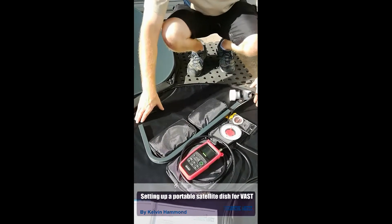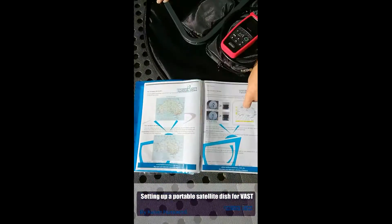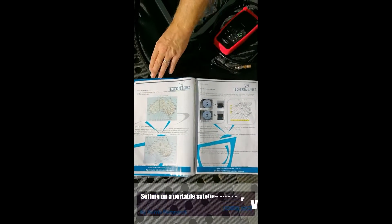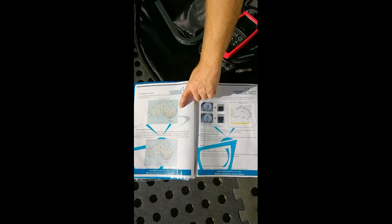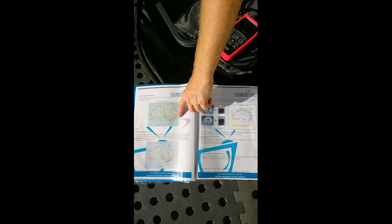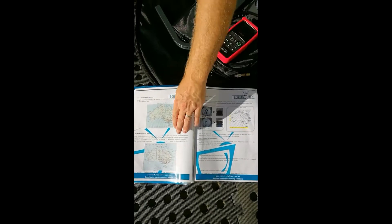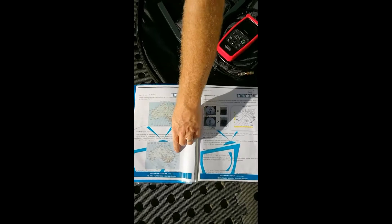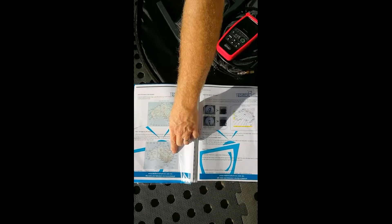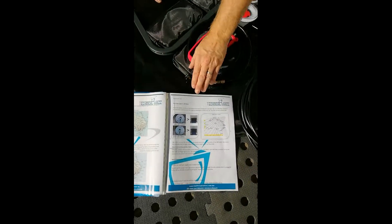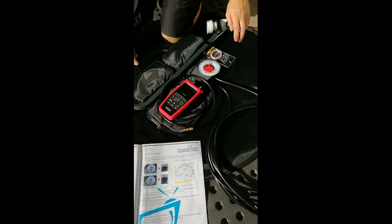And we're going to use these three diagrams here for our alignment. So first of all we need to find out what direction we need to point it in. On the east side of Australia we need about 5 degrees off north. Then we're going to work out our elevation. In this area we need it at 60 degrees. And then we work out our LNB skew, which is the little part on the front of the dish.